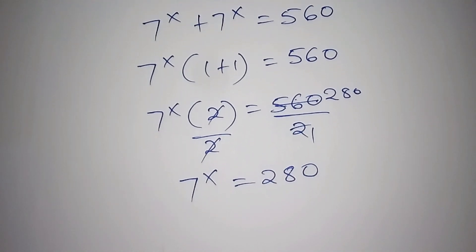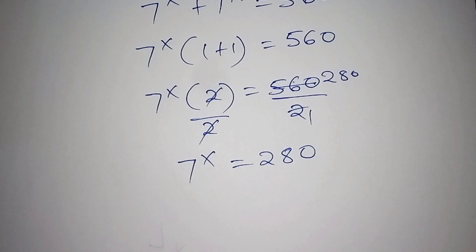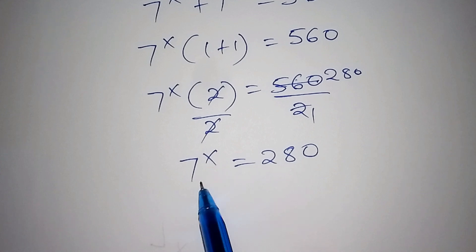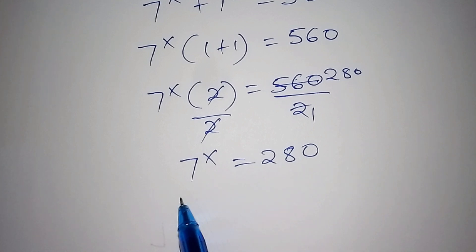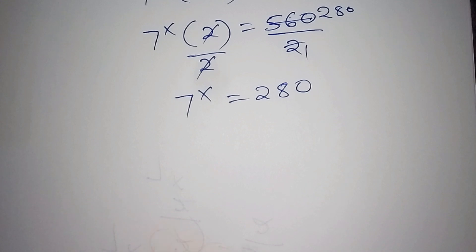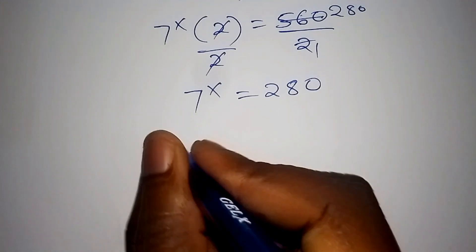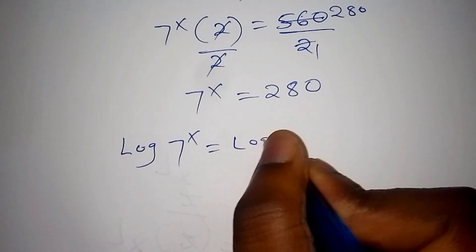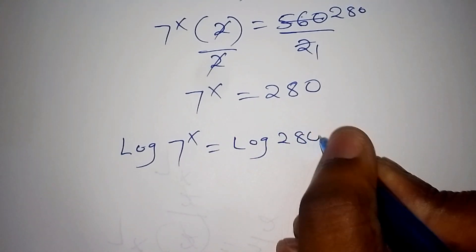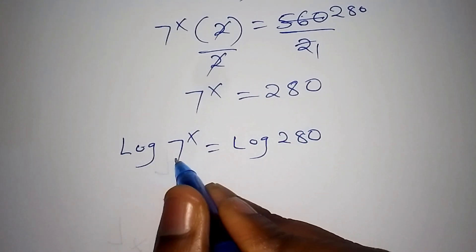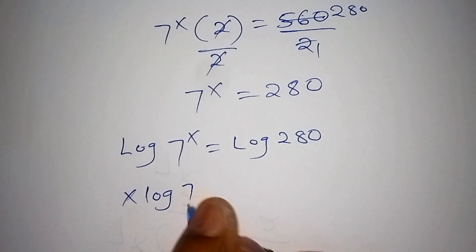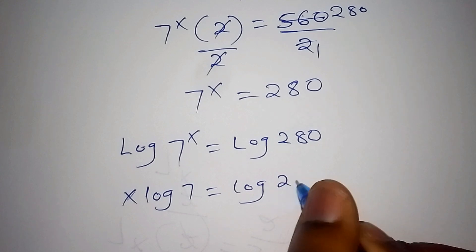The next thing we need to do: we shall express 280 to the base of 7, which is difficult. So we shall use the log. We shall have the log of 7 to the power of x is equals to the log of 280. The log of 7 to the power of x can also be written as x log 7 is equals to the log of 280.